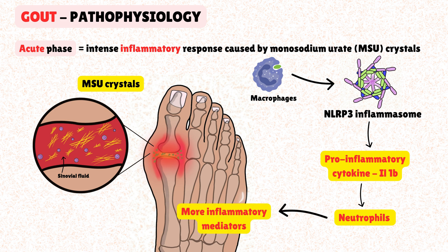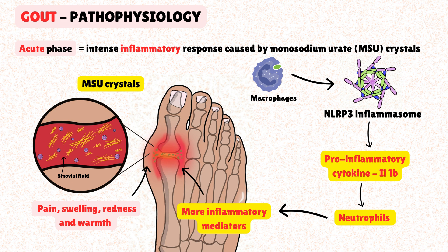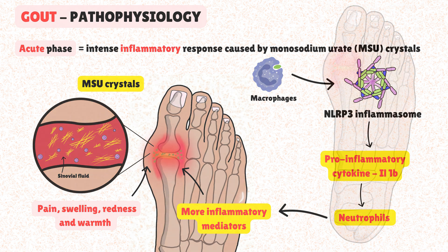This self-reinforcing cycle of cytokine release and immune cell recruitment results in the classic clinical signs of a gout attack: severe pain, swelling, redness, and warmth in the affected joint. The attack eventually resolves on its own, but the underlying hyperuricemia and crystal deposits remain, setting the stage for future attacks.